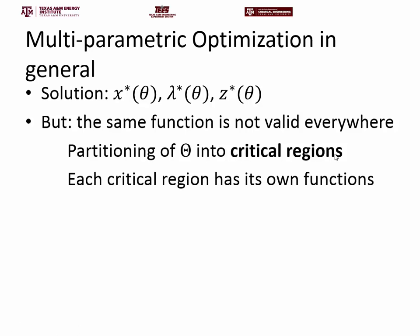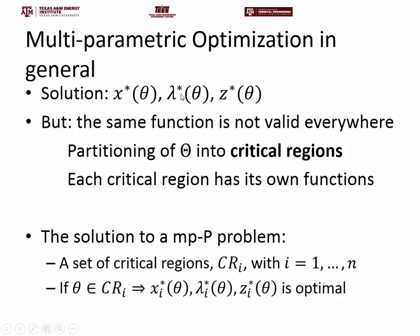Each critical region has its own functions, meaning you have one triplet — x star, lambda star, z star — for each critical region. The solution to a multi-parametric programming problem consists of a set of critical regions CR_i, numbered n, and for each region, if a parameter lies in that region, these functions are optimal. What you need to do to find the optimal solution is identify the critical regions and the associated functions x_i star, lambda_i star, and z_i star of theta.